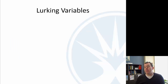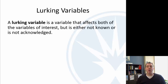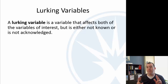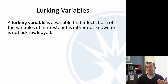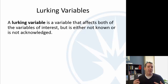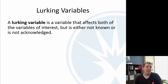One of the main reasons is something called a lurking variable. A lurking variable is one that affects both variables you're interested in — the one you think might be the cause and the one you think might be the result. Sometimes there's a lurking variable that either you don't know about or aren't acknowledging that affects both of them, and that's actually the true cause.